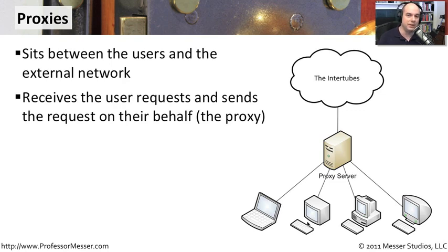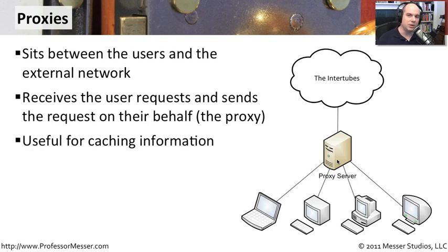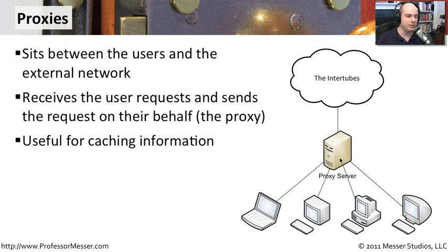There are some performance requirements. Sitting in the middle and stopping everybody's internet connection requires that the proxy server be pretty capable — able to handle a lot of different connections and a lot of bandwidth. Proxy servers are also very useful for caching. If you're downloading a big file and the next user requests the same thing, the proxy can serve the cached copy directly, so it doesn't have to make that request back to the internet. The results get to end users faster, and you save bandwidth as well.